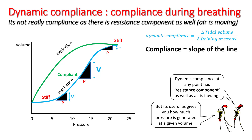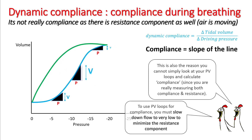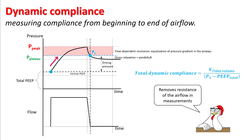To take the resistance out of this dynamic compliance, you can slow down the flow. Experiments have shown that once you drop the flow below 10 liters per minute, your calculated compliance at that point will be very close to the real compliance. To figure out total dynamic compliance, you can measure the compliance from the beginning of inhalation to the point P1 where there is no flow. So total dynamic compliance is given by tidal volume divided by P1 minus PEEP. Try to understand the difference between total dynamic compliance and static compliance, where the denominator is plateau minus PEEP rather than P1 minus PEEP.